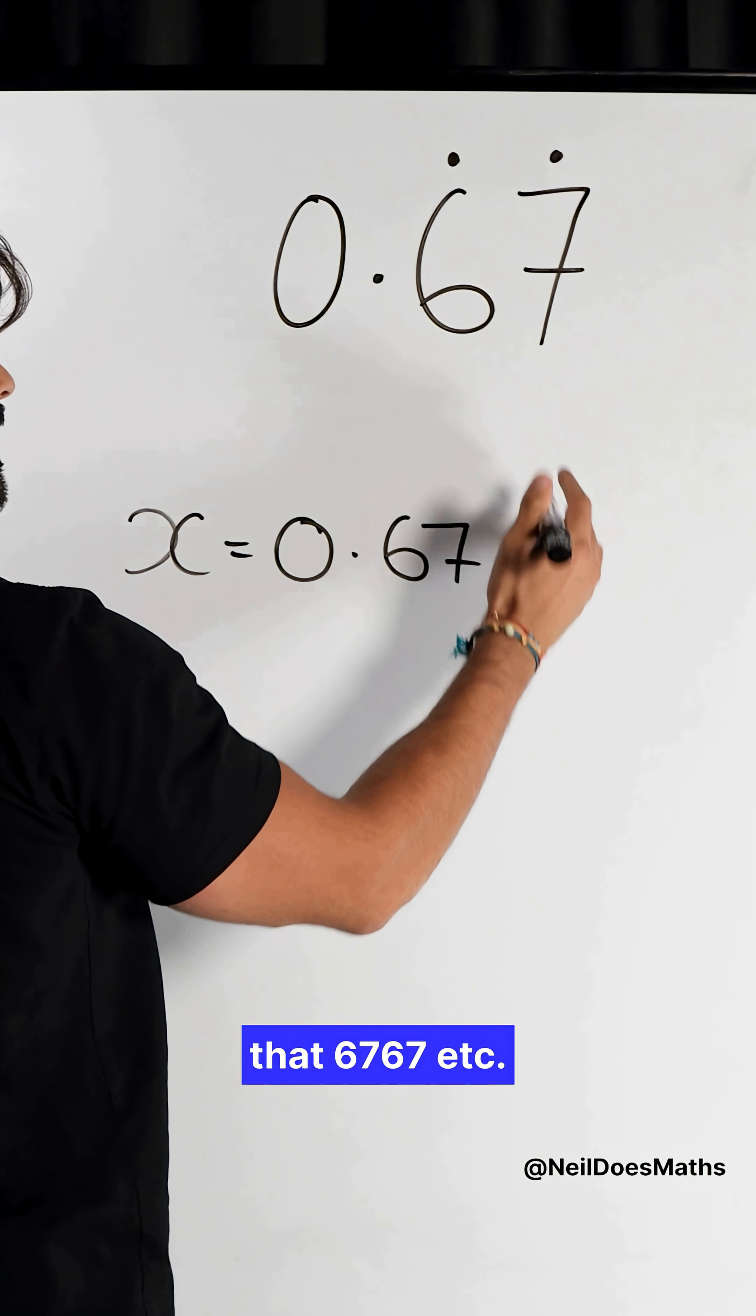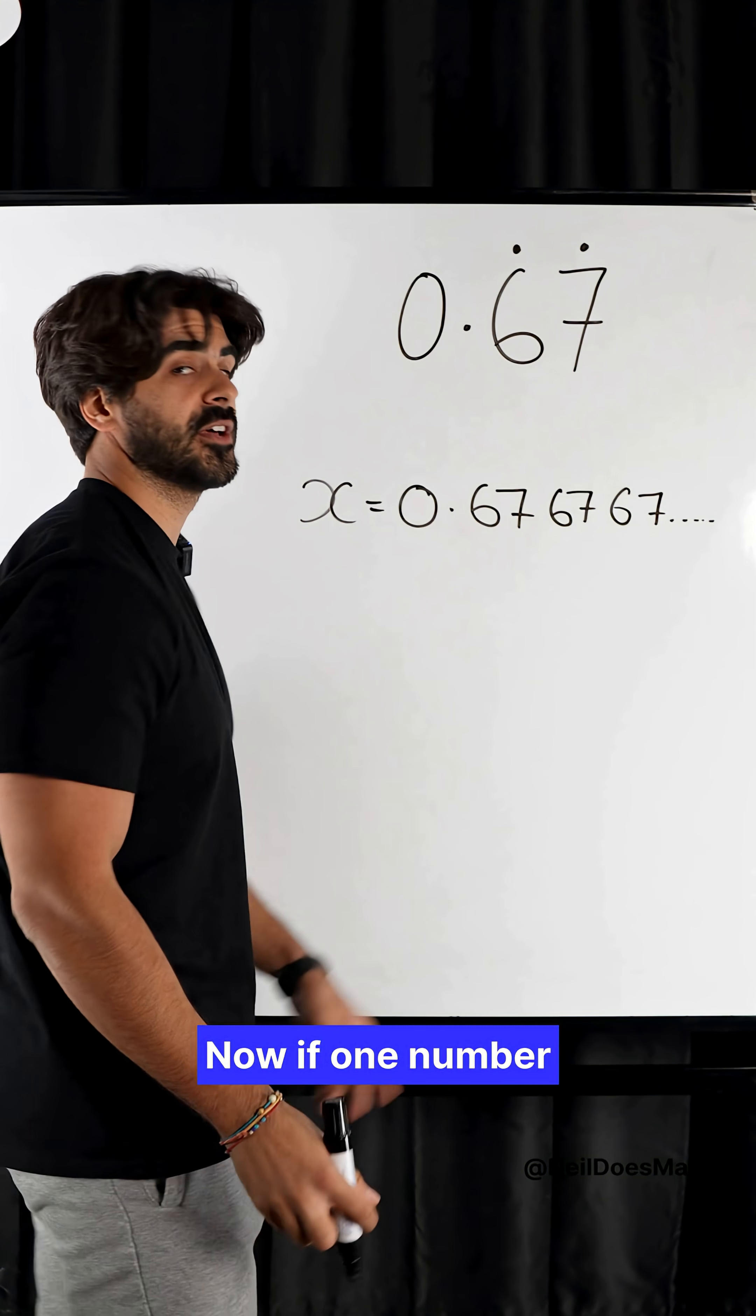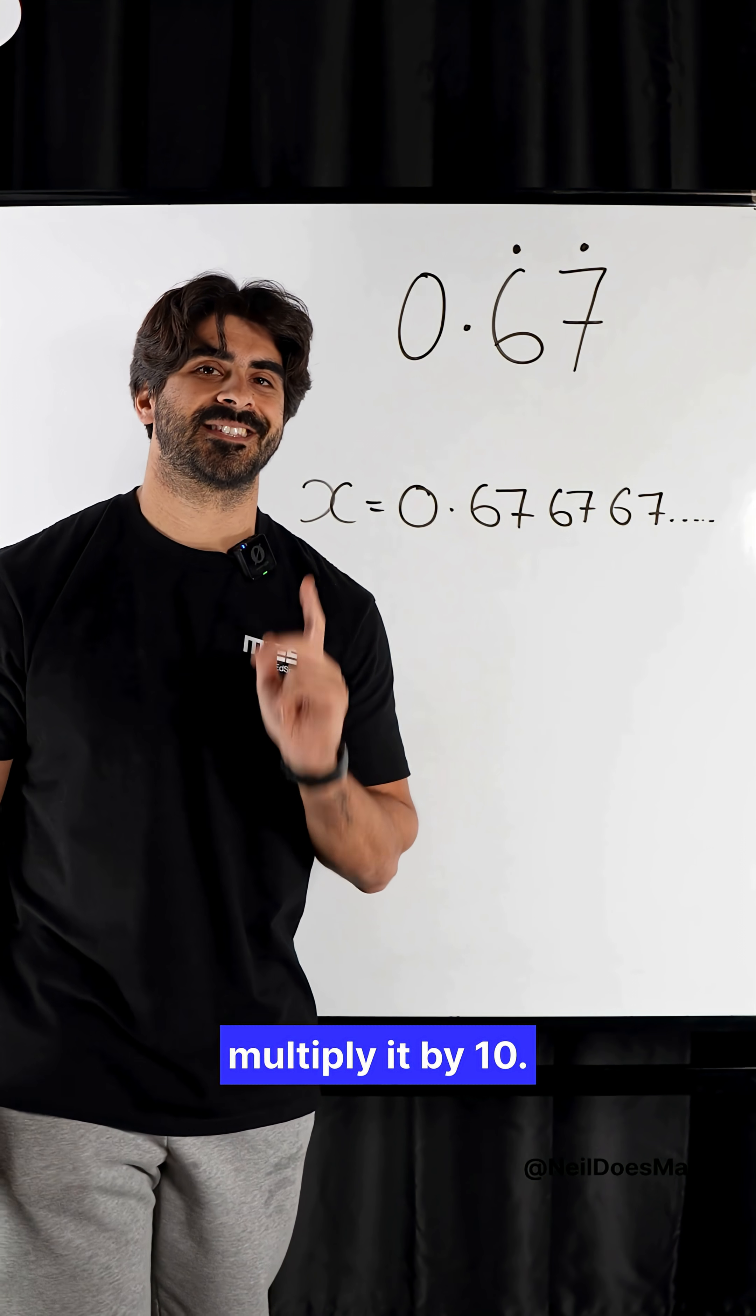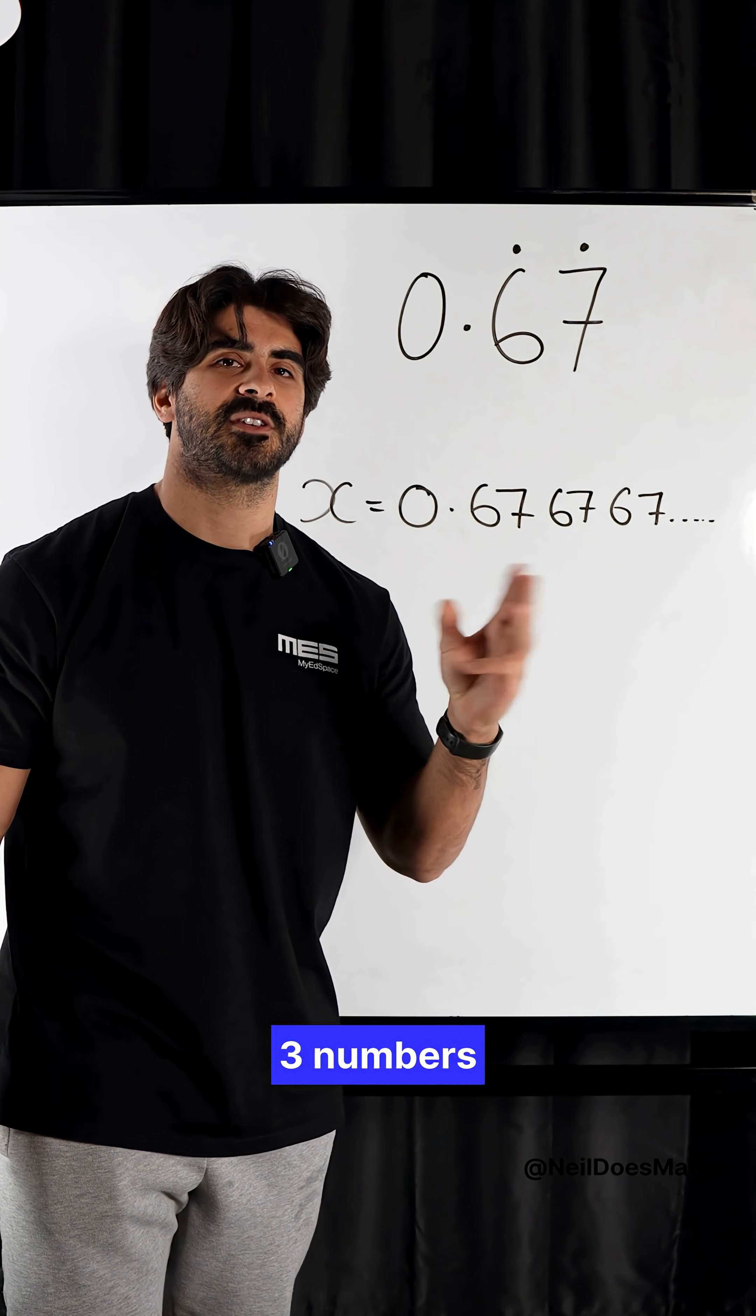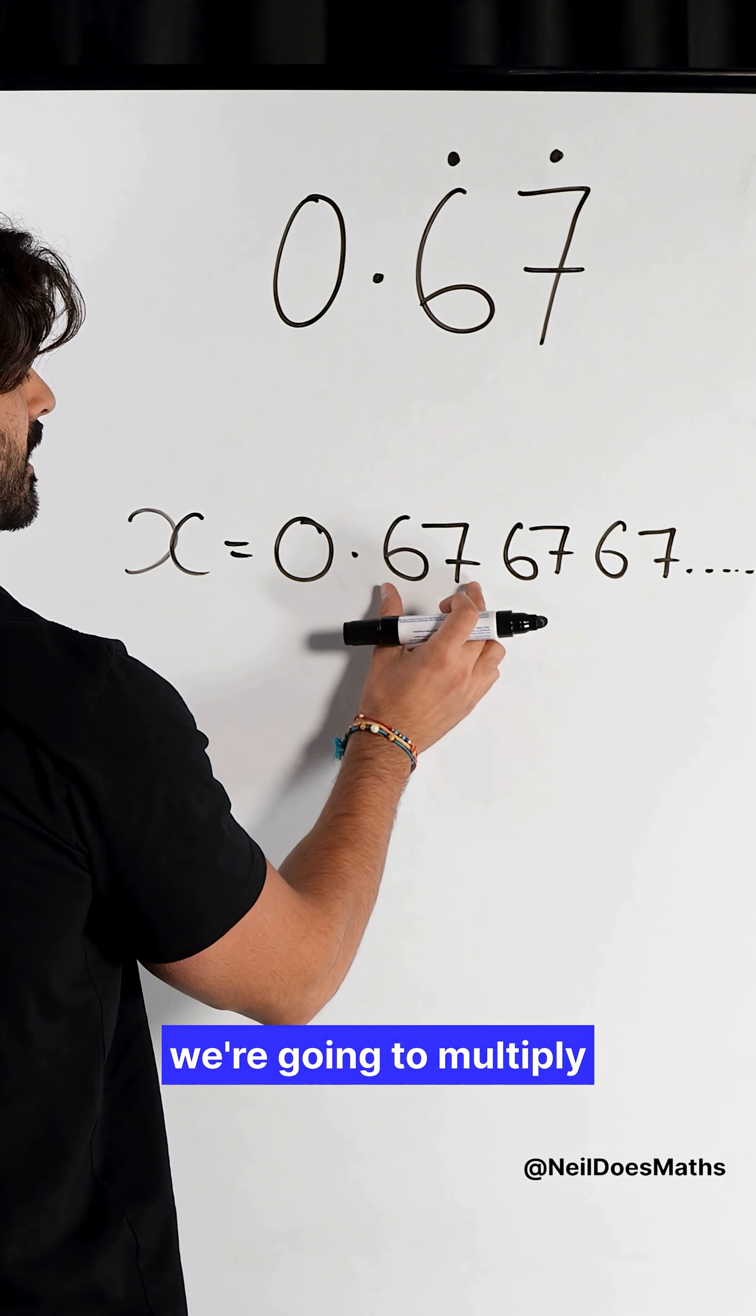Here we're recurring that 6, 7, 6, 7, etc. Now, if one number's recurring, you multiply it by 10. Two numbers recurring by 100. Three numbers, 1,000, etc. So, two numbers are recurring. We're going to multiply it by 100.